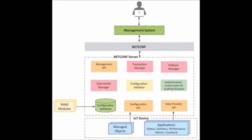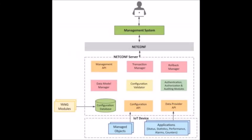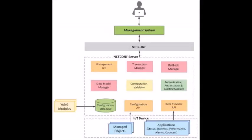The Configuration validator checks if the resulting configuration after applying a transaction would be a valid configuration or not. Then we have the Configuration database, which contains both the configuration and operational data. Using the Configuration API, applications on the IoT devices can read configuration data from the configuration database and write operational data to the operational database.